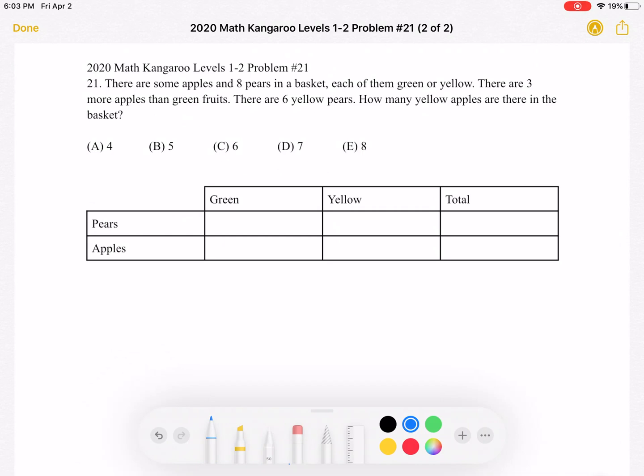As you can see, I've included a table so that we can better organize the information given to us in the problem. To start, we know that we have a total of 8 pears. And we know that our fruits are either green or yellow, and that we have 6 yellow pears.